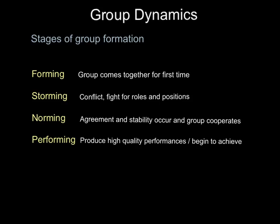Every time you sign new players or new members join your group, they set you back towards the forming stage and you have to work back through to performing. Sometimes you see teams with excellent players who've spent a lot of money but just aren't knitting together — they're stuck in the storming or norming phase. A potential reason for not reaching the performance stage is due to a lack of cohesion.